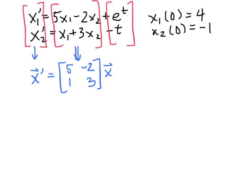And then we're going to take this last part, and let me just write it for now as a vector containing the functions e^t and -t. But we'll rewrite that last vector as a vector f(t).